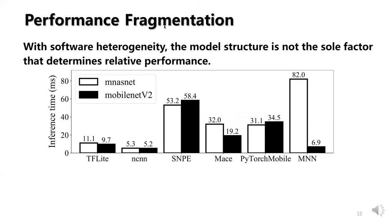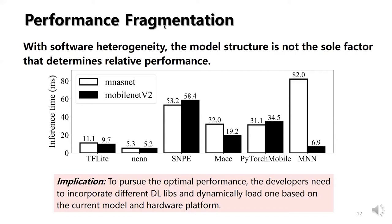We deem that model complexity does affect inference time. For example, complexity is represented by FLOPs and the number of model parameters. Although MobileNet V2 and MnasNet have similar FLOPs and parameters, their performance varies a lot across different DL libraries. Since heterogeneity makes on-device optimization more difficult, developers need to incorporate different libraries and dynamically load one based on the current model and hardware platform.